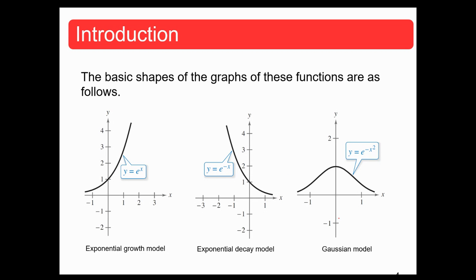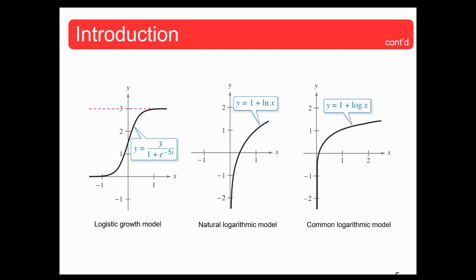The Gaussian model, like we said, is the bell curve that we've learned about here. And then there is the logistic growth model, where it's growing exponentially and then all of a sudden it evens out.